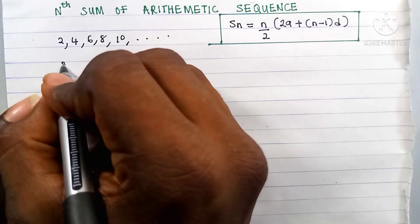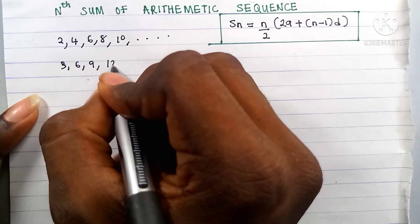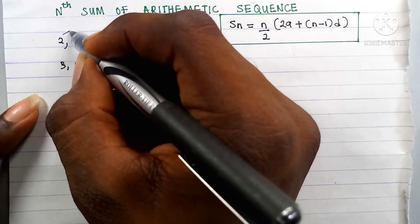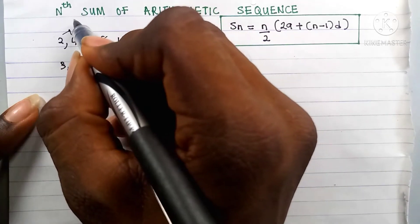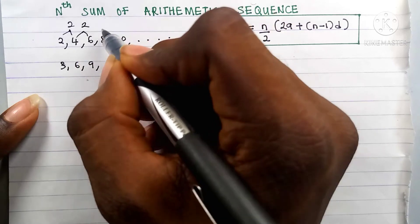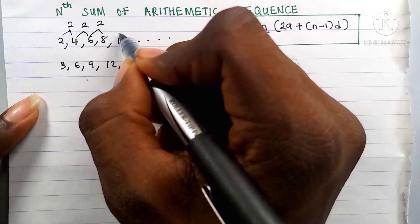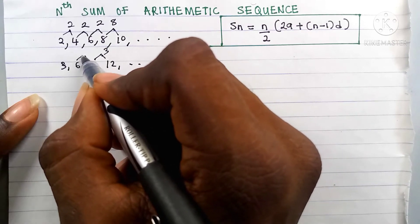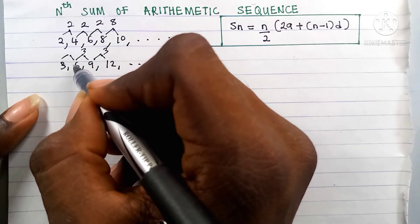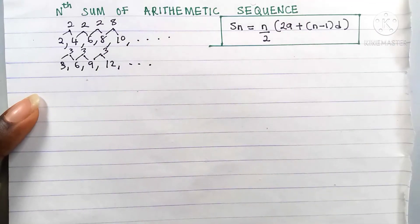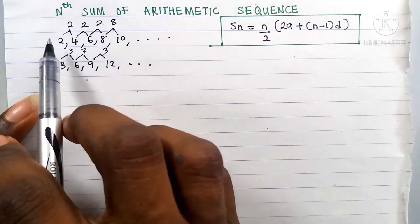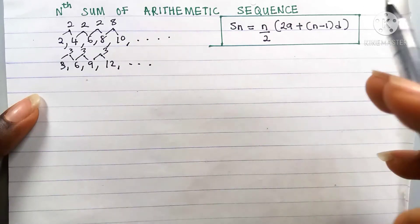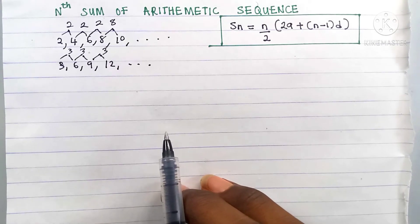Or like this: 3, 6, 9, 12. You can see that 4 minus 2 is 2, 6 minus 4 is 2, 8 minus 6 is 2, 10 minus 8 is 2. And here 12 minus 9 is 3, 9 minus 6 is 3, 6 minus 3 is 3. So an arithmetic sequence is a sequence that has a common difference between each term.